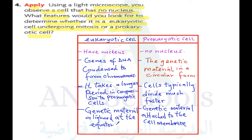So the main features to look at — these are just a few highlighted. If you want to know if the cell has no nucleus: if the cell divides faster, then it is prokaryotic. And if the genetic material is attached to the cell membrane and is in circular form, this will tell you that this is actually a prokaryotic cell.